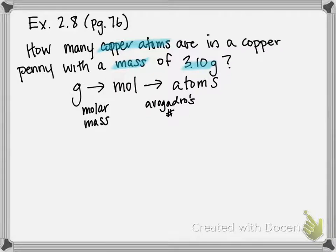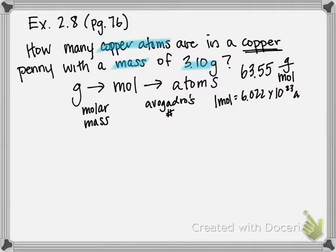In order to do this we need to know what the molar mass of copper is. If you look at a periodic table, copper's molar mass is 63.55 grams per mole, and remember Avogadro's number is 1 mole equals 6.022 times 10 to the 23rd atoms. So these are the two equivalencies we're going to use.